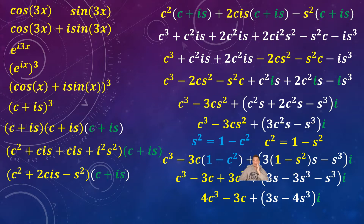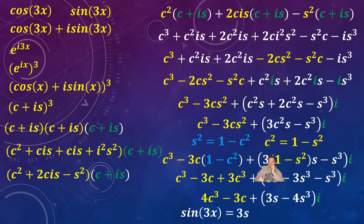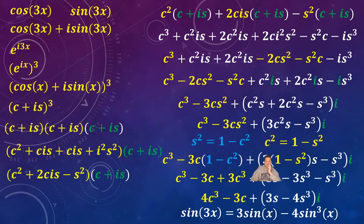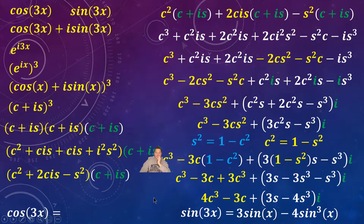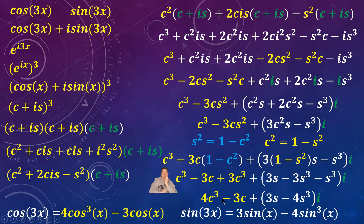So I can read off my identities: sine of 3x equals 3s minus 4s cubed, which is equivalent to 3 sine x minus 4 sine cubed x. And cosine of 3x equals 4 cosine cubed x minus 3 cosine x — equivalent to the 4c cubed minus 3c from the real part.